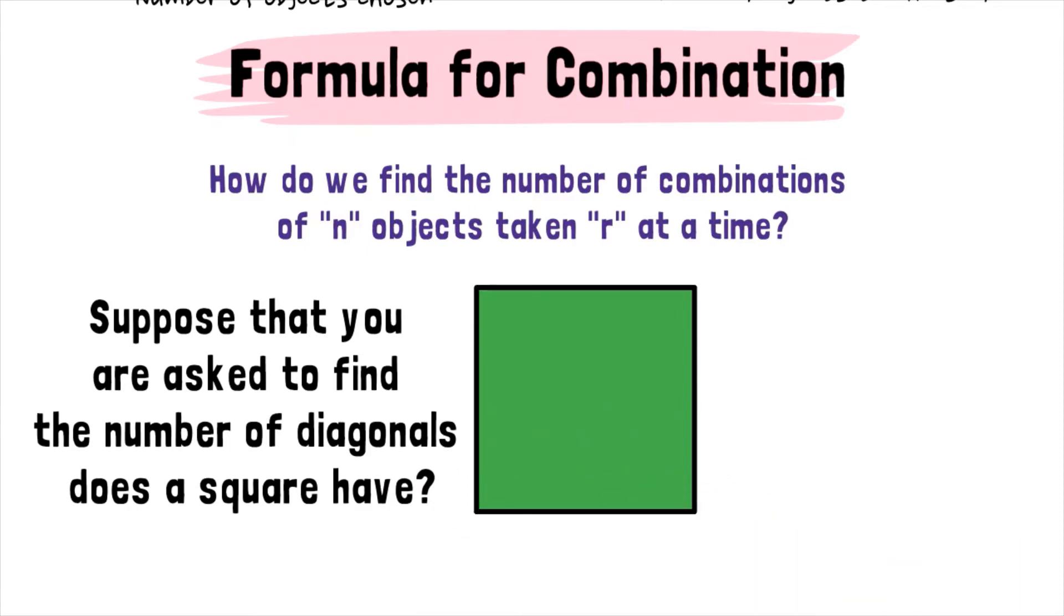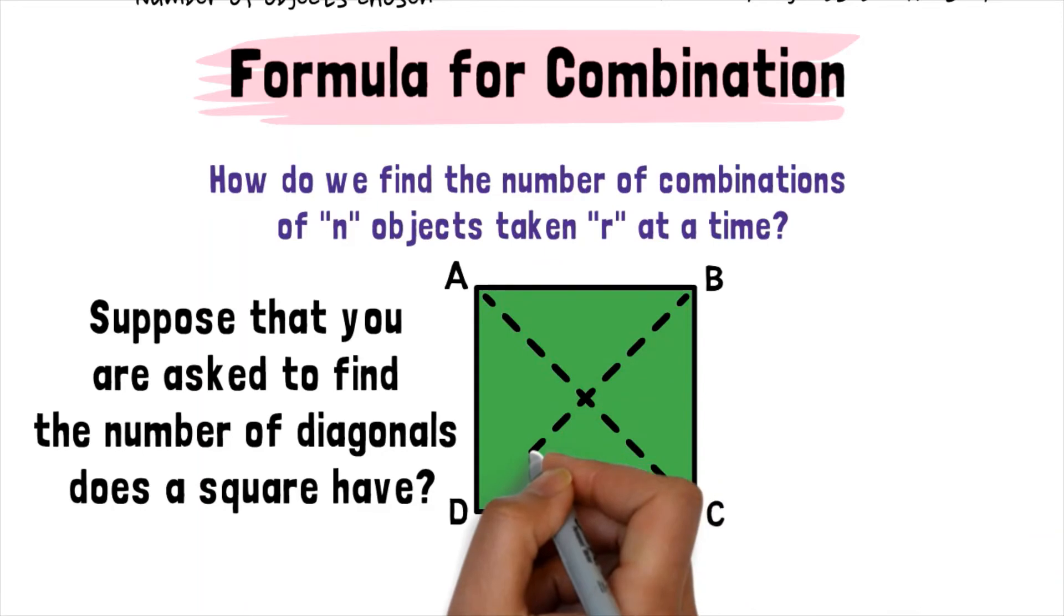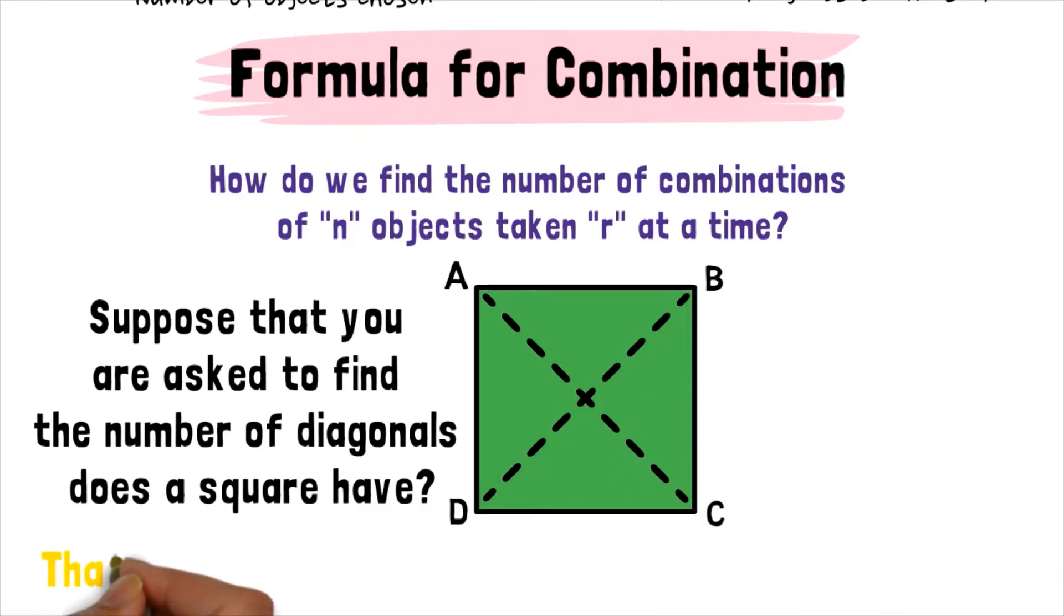Suppose that you are asked to find the number of diagonals a square has. That is, two endpoints out of four endpoints. If we manually list down all the diagonals formed out of the square ABCD, we will have the following.